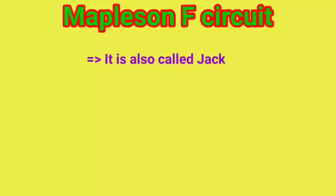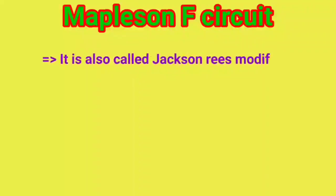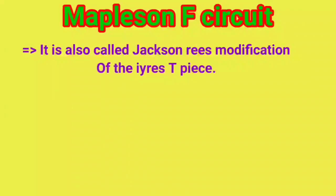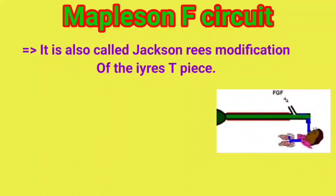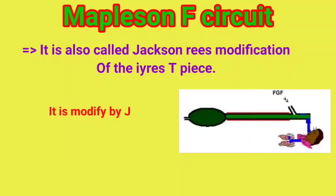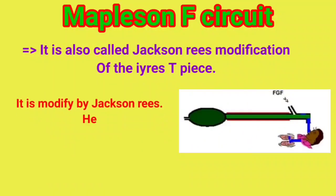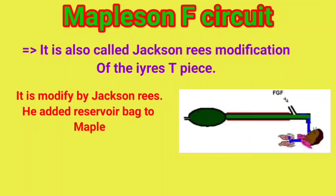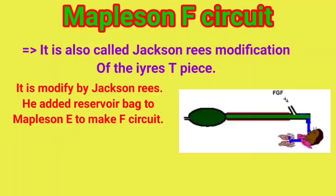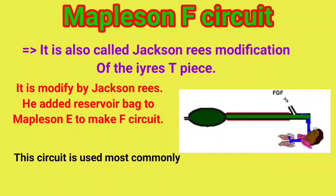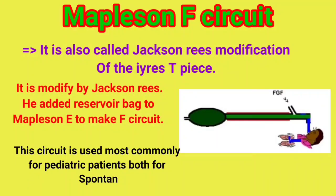Mapleson F circuit. It is also called the Jackson-Rees modification of the Ayre's T-piece. It was modified by Jackson-Rees, who added a reservoir bag to Mapleson E to create the F circuit. This circuit is most commonly used for pediatric patients, for both spontaneous and controlled ventilation.